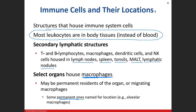When we talk about the wandering versions, those are the cells that come and go — they can migrate into the tissue and leave the tissue. So macrophages are either permanent residents in these organs and tissues, like the lungs, or they're going to come and go.